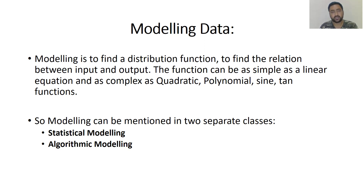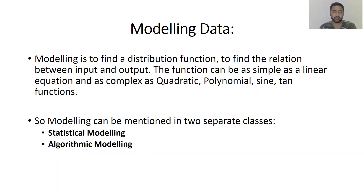There are basically two categories of modeling that we apply in data science. The first one is statistical modeling, and the other one is algorithmic modeling. Statistical modeling is based on mathematical formulations, using different functions and tools to provide accurate results related to particular data.